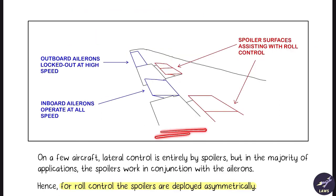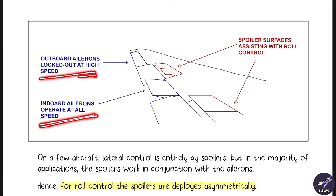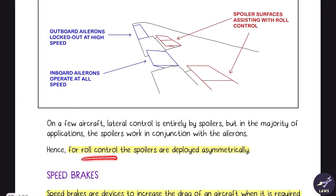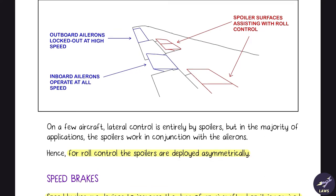On a large aircraft, the outboard ailerons are locked out at high speeds and the inboard ailerons are used, with the spoilers assisting them. For roll control, the spoilers are deployed asymmetrically. For example, if the aircraft is rolling to the right, the right aileron moves up and the left aileron moves down, so the spoilers go up on the right side to match the drag.